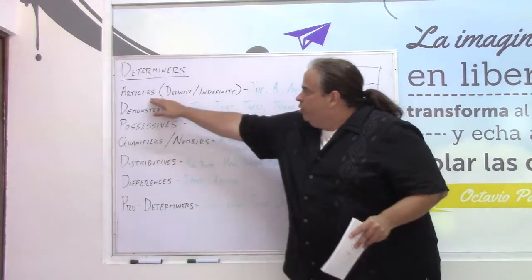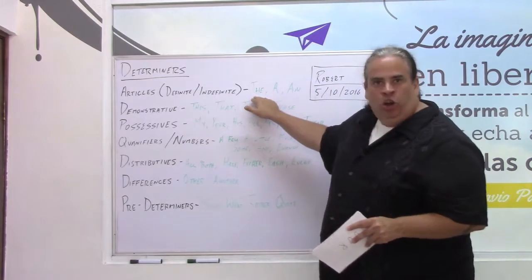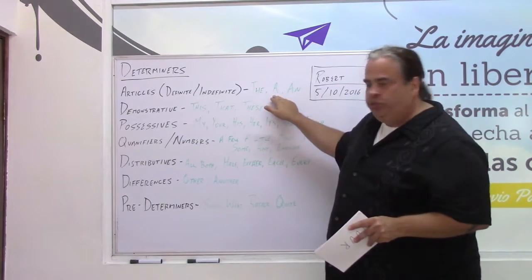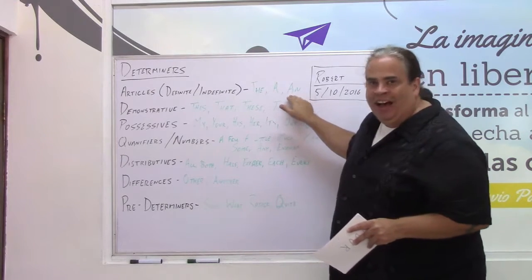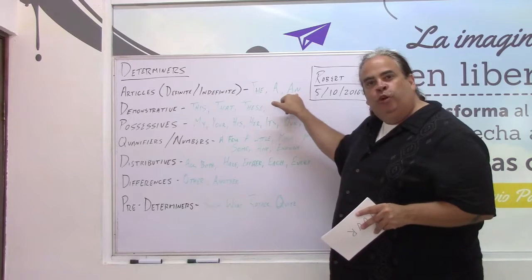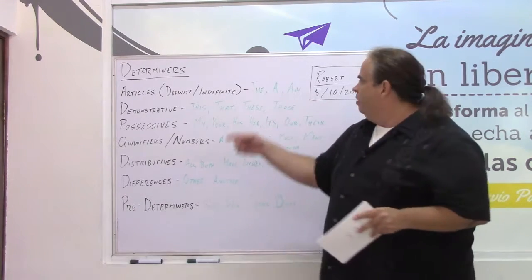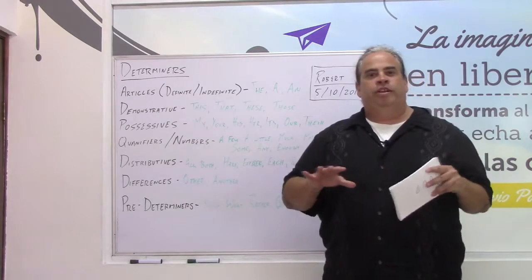So for example, we have the articles, the definite and indefinite articles. The dog, a house, an otter. 'An' goes before a noun with a vowel: A-E-I-O-U. 'A' goes before a word that has no vowel.